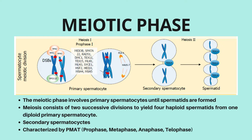Secondary spermatocytes are also written as 2N. The meiotic phase is characterized by PMAT: prophase, metaphase, anaphase, and telophase. Prophase of the first meiotic division ensures genetic heterogeneity so that each secondary spermatocyte and subsequently each spermatid will be genetically unique. At the end of telophase, the spermatids do not separate completely but remain interconnected by fine bridges for synchronous development.